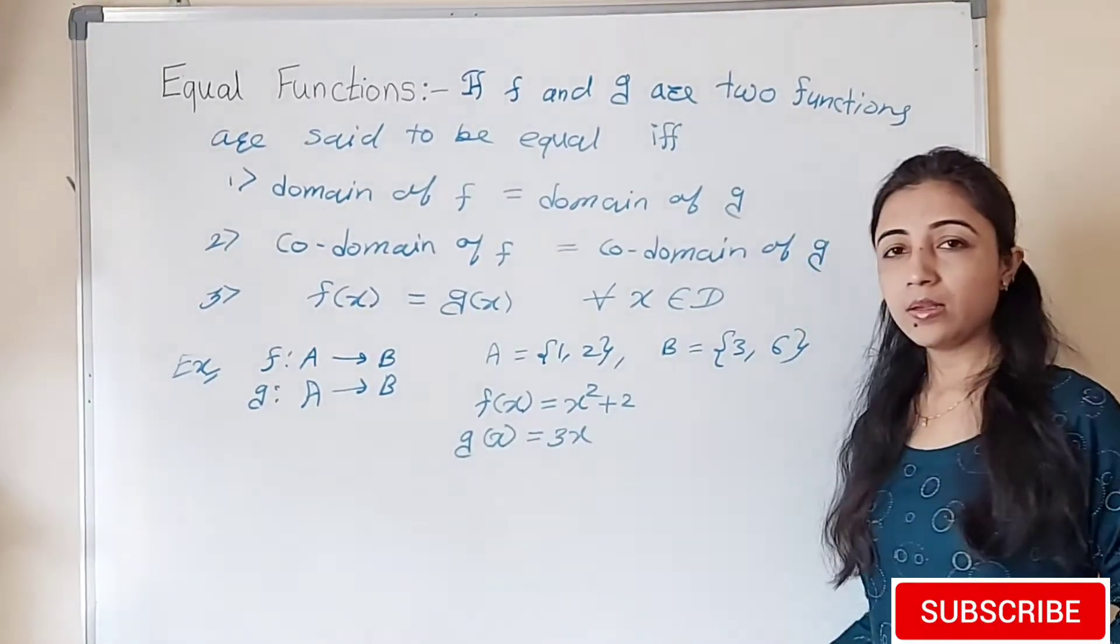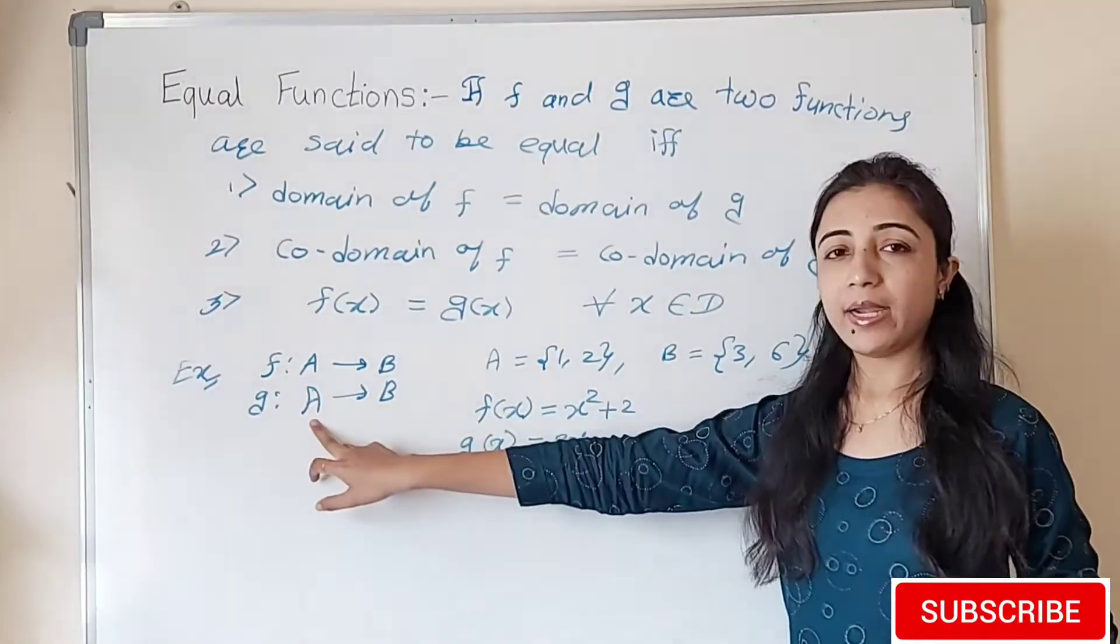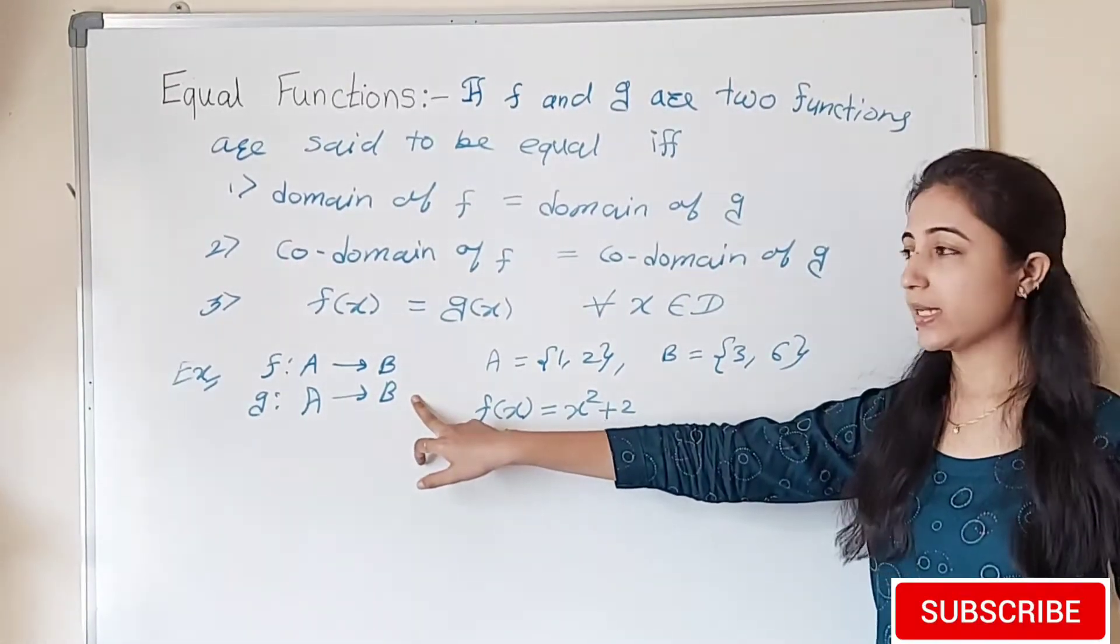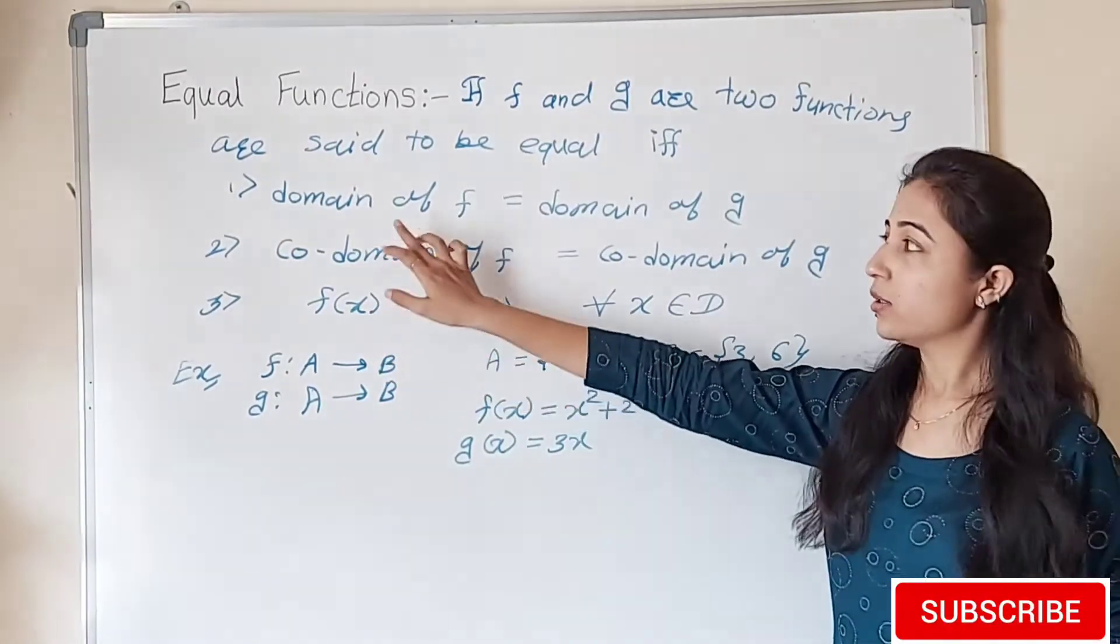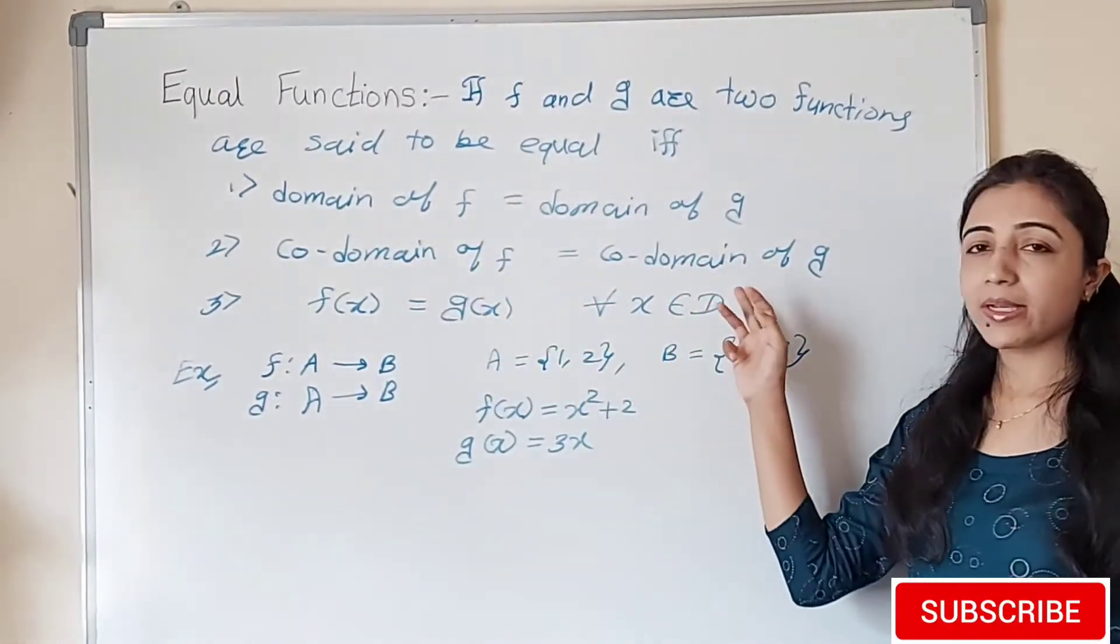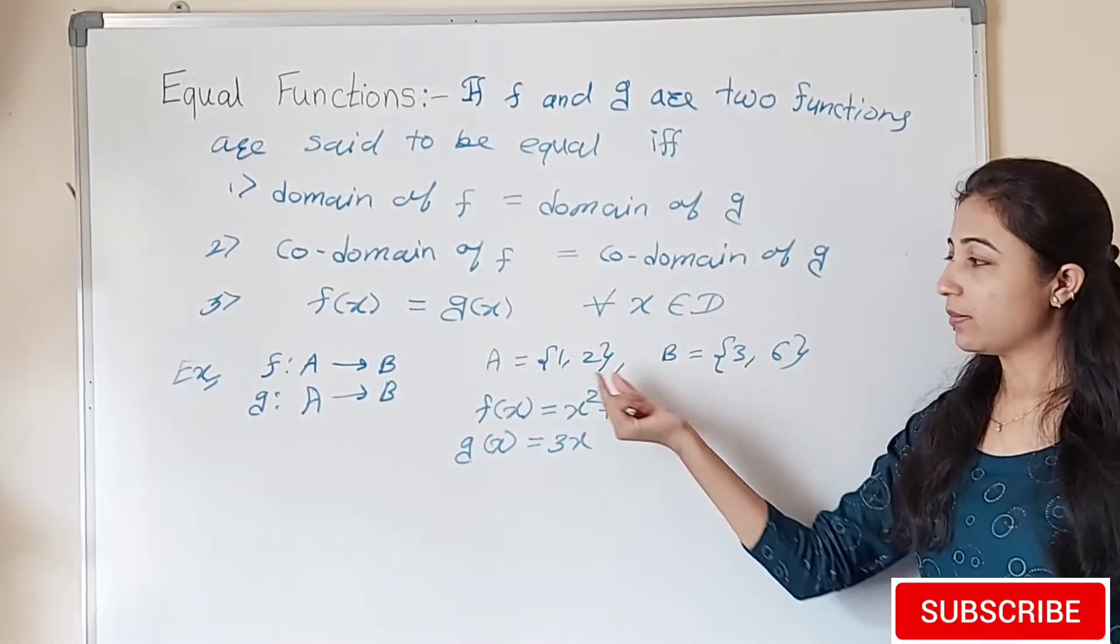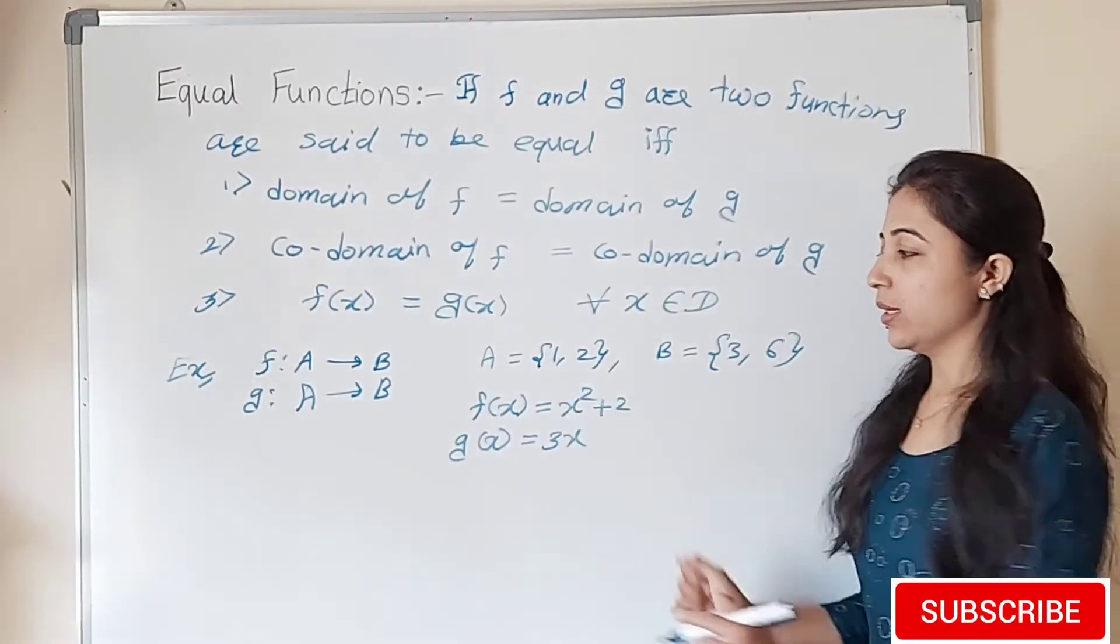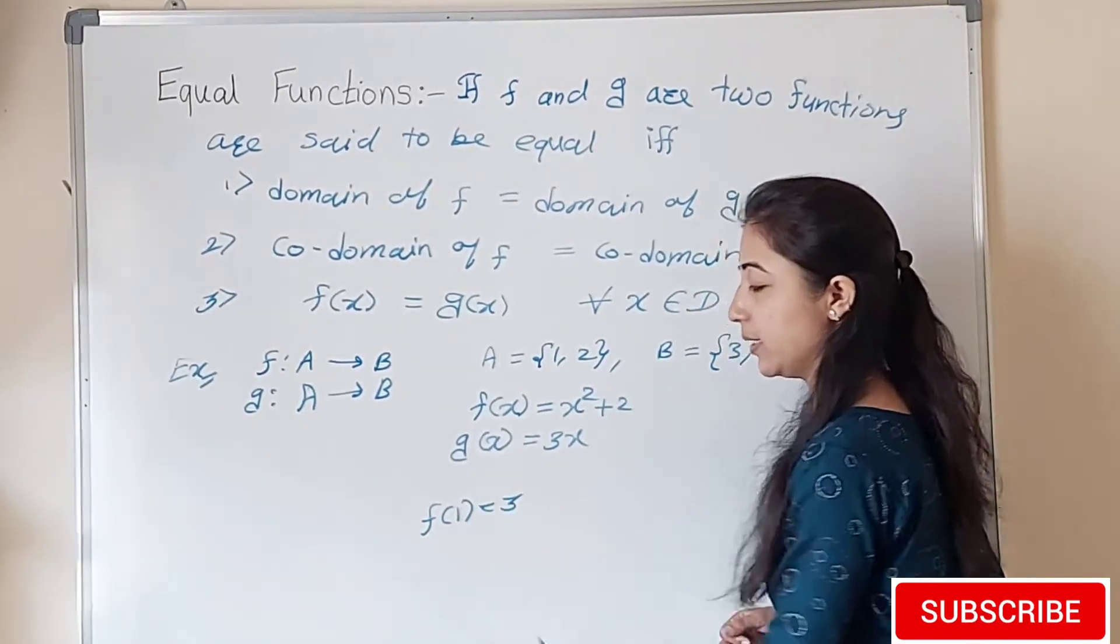From this example it is clear that f and g are defined on the same domain and their codomain is also equal. So first two conditions already hold: domain of f equals domain of g, codomain of f equals codomain of g. Third condition is corresponding images.